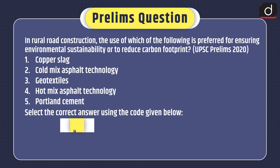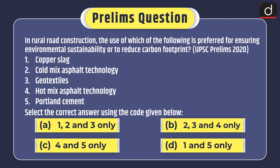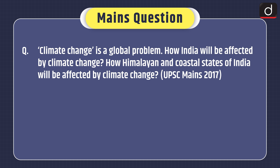Now it's time for the practice question. For prelims, the question is: in rural road construction, the use of which of the following is preferred for ensuring environmental sustainability or to reduce carbon footprint? (1) Copper slag, (2) Polled mixed asphalt technology, (3) Geotextiles, (4) Hot mix asphalt technology, (5) Portland cement. Select the correct answer: 1, 2, and 3 only; 2, 3, and 4 only; 4 and 5 only; or 1 and 5 only. This question was asked in UPSC prelims 2020. For mains, the question is: climate change is a global problem. How will India be affected by climate change? How will the Himalayan and coastal states of India be affected? This question was asked in UPSC mains 2017.